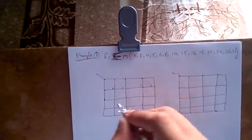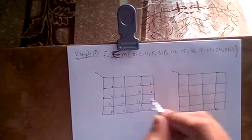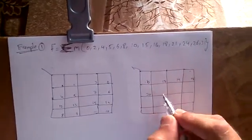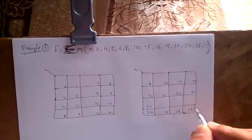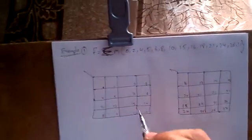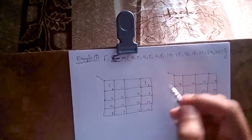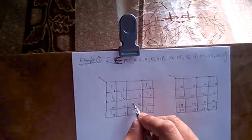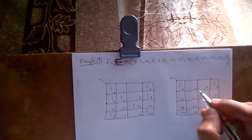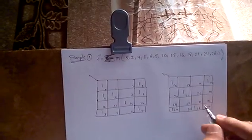Let me draw the two K-maps and give the numbering. First K-map: 0, 1, 2, 3, 4, 5, 6, 7, 8, 9, 10, 11, 12, 13, 14, 15. Second K-map: 16, 17, 18, 19, 20, 21, 22, 23, 24, 25, 26, 27, 28, 29, 30, 31. The inputs given for this example are: 0, 2, 4, 5, 6, 8, 10, 15, 16, 18, 21, 24, 26, 31. I'm going to place 1s in those respective positions.